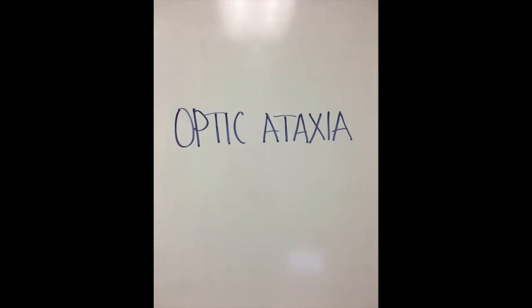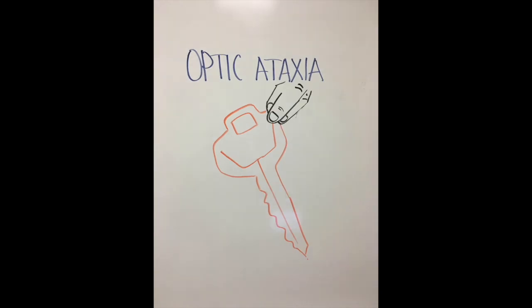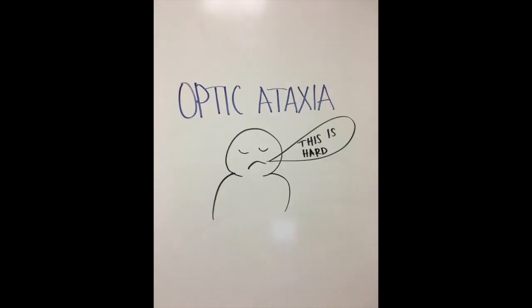Meanwhile, optic ataxia is what happens when there's damage to the dorsal stream of vision. In this case, patients can recognize the keys from before, but when they reach to pick them up, they are unable to grasp them properly. It is almost like if a person with regular vision tried to pick up something in a very dark and unfamiliar room. This difficulty of interaction with objects is very debilitating in everyday life, and patients with optic ataxia often need assistance with tasks that others may consider very simple and ordinary.